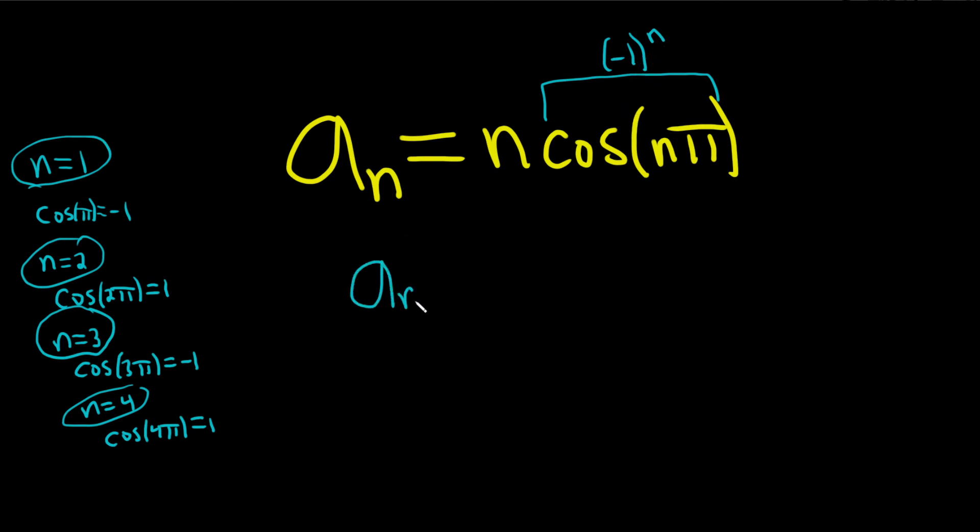So we can rewrite our sequence as n times negative 1 to the n. And now you see that as n approaches infinity, that's what we're supposed to do, right? Take the limit as n goes to infinity. And so if we get a number, we say it converges. If we don't, it diverges.